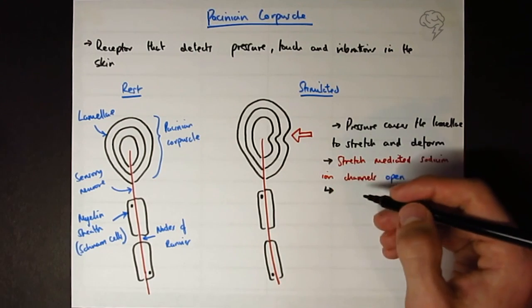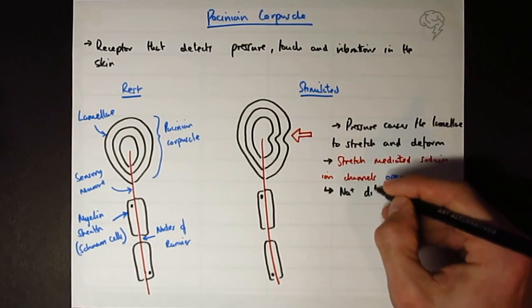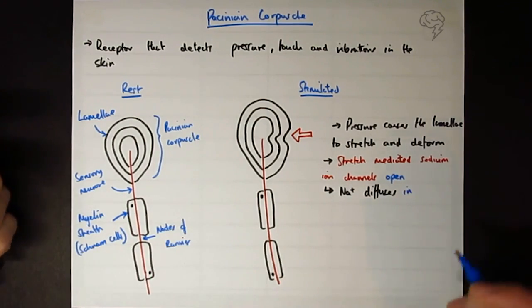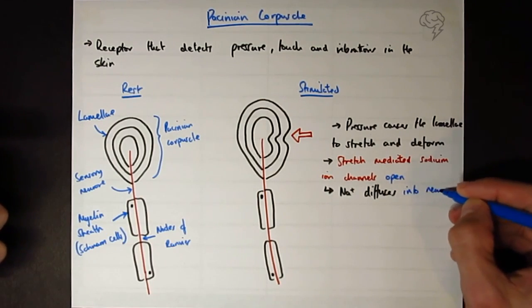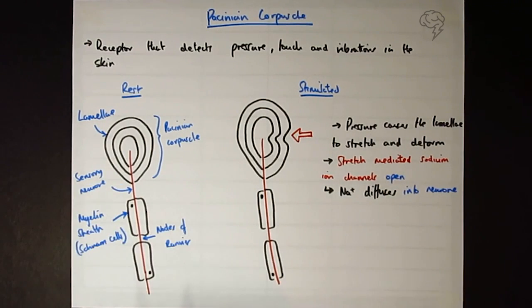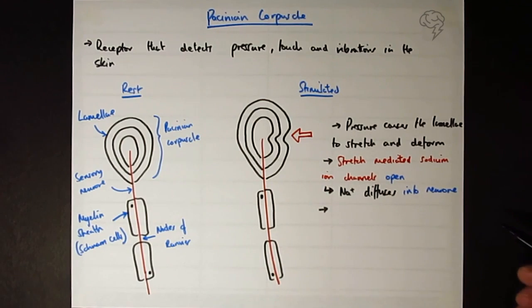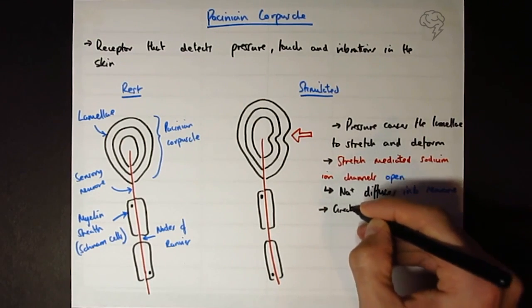They want to know what happens to the ions, so that we can now say sodium Na+ diffuses in. They also want to know the direction, so we could say into the neuron. Again, if you've not seen the video on resting potential, that's not going to make a huge amount of sense to you. We can say the greater the pressure or the greater the stimulus, the more the sodium ion channels open.